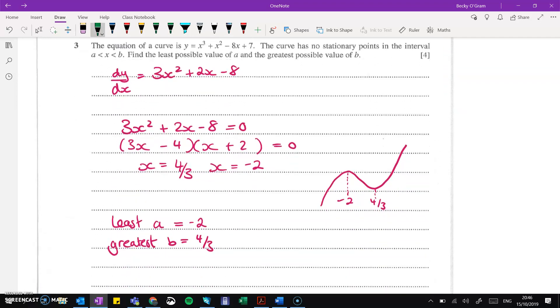On question 3, we have the equation of this curve. It's a little bit of an unusual question, this one, in testing your knowledge of stationary points. It took me a minute to think about what exactly they were asking here. So the curve has no stationary points in the interval between a and b. Find the least possible value of a and the greatest possible value of b. So we're looking for stationary points. That means we need to differentiate. Then we will set that derivative equal to 0.